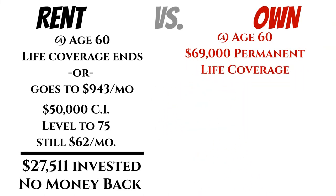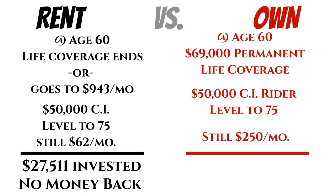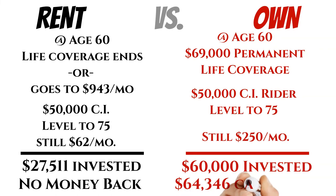Now let's compare to the ownership side. At age 60, there's still going to be $69,000 worth of permanent life coverage — the $450,000 20-year rider falls off, but that original $50,000 actually grows automatically. It has to automatically add coverage to keep the investment within the tax rules, so you still have some coverage. The critical illness rider is still in place and we're still paying $250 per month. At this point, the person has invested a total of $60,000. If they decided today to cancel this program, they would get $64,346 back — so it's a kind of money-back guarantee in the worst-case scenario.